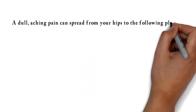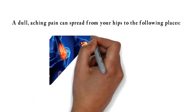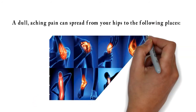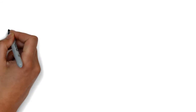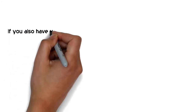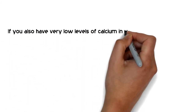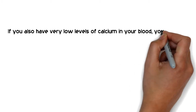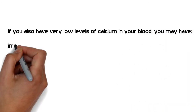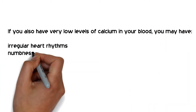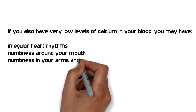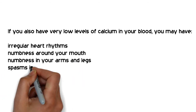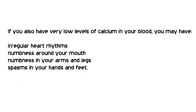A dull aching pain can spread from your hips to the lower back, pelvis, legs, and ribs. If you also have very low levels of calcium in your blood, you may experience irregular heart rhythms, numbness around your mouth, numbness in your arms and legs, and spasms in your hands and feet.